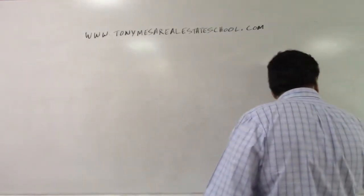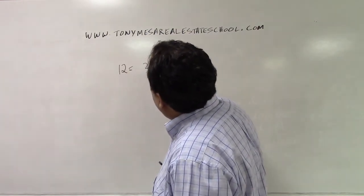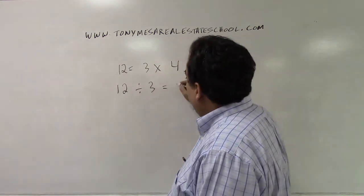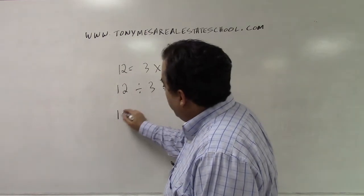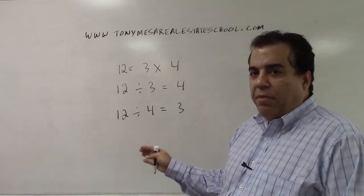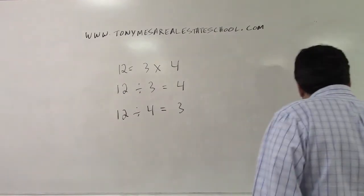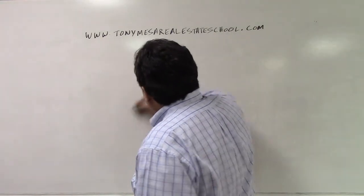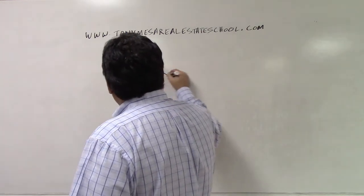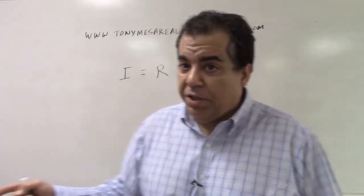Mathematically, one number times another number gives you an answer. For example, 12 = 3 × 4. That means 12 divided by 3 equals 4, or 12 divided by 4 equals 3. Whenever you have one number times another and get an answer, you can always take the answer and divide it by one of the two numbers to get the other.